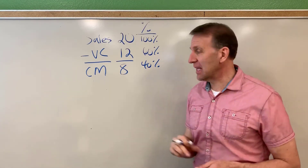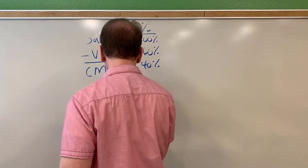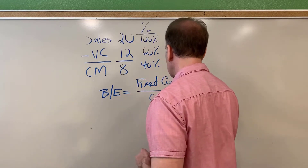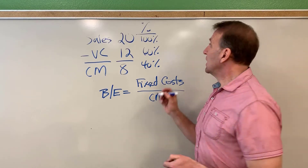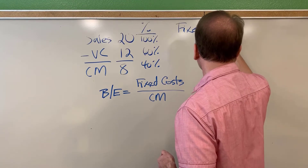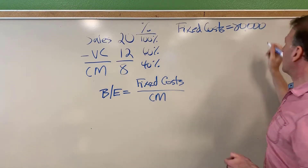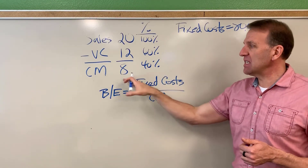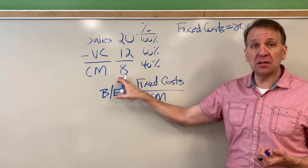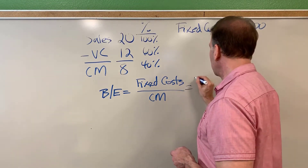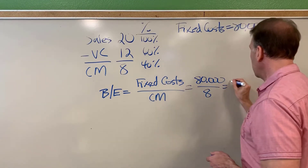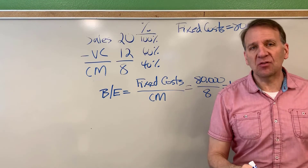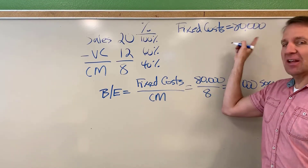Now we can calculate our breakeven. This is called the shortcut approach: breakeven equals fixed costs divided by contribution margin per unit. The fixed costs in our example are $80,000. If my fixed costs are $80,000 and every time I sell a soccer ball I have $8 left over as contribution margin, then I take $80,000 divided by $8 and that gives me 10,000 soccer balls. You need to sell 10,000, and when you do, each one generates $8 of contribution margin, which covers your fixed costs.